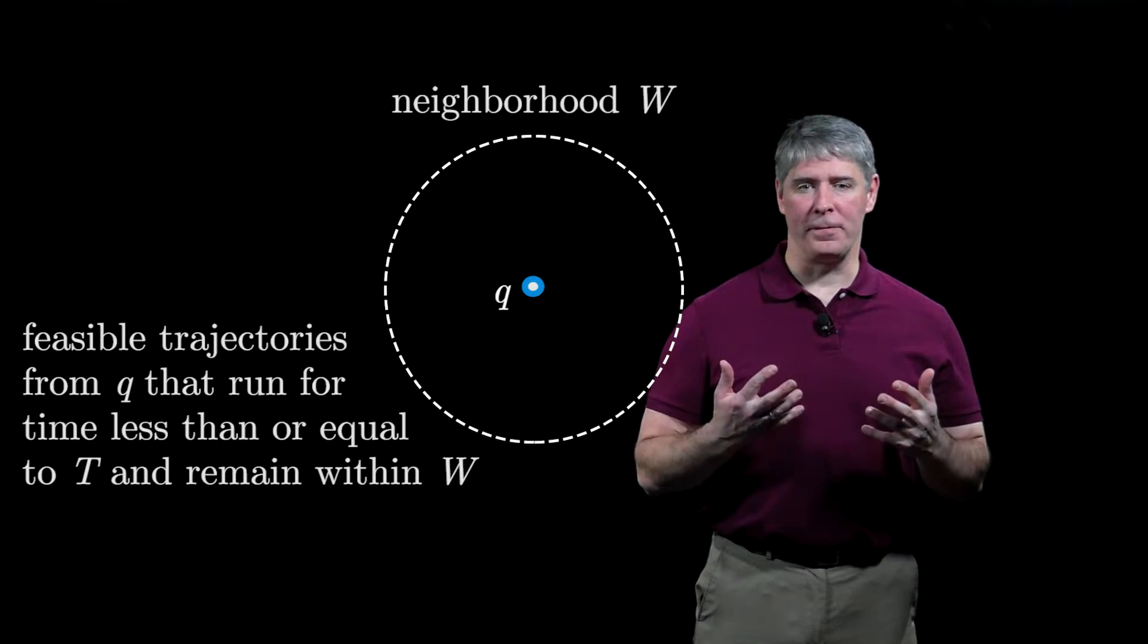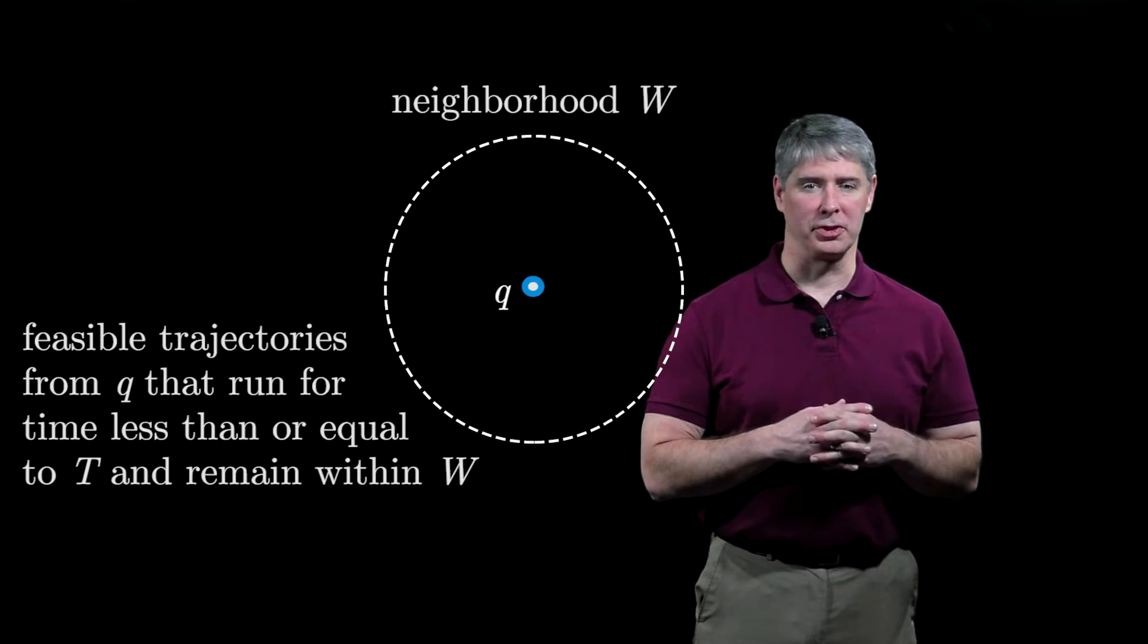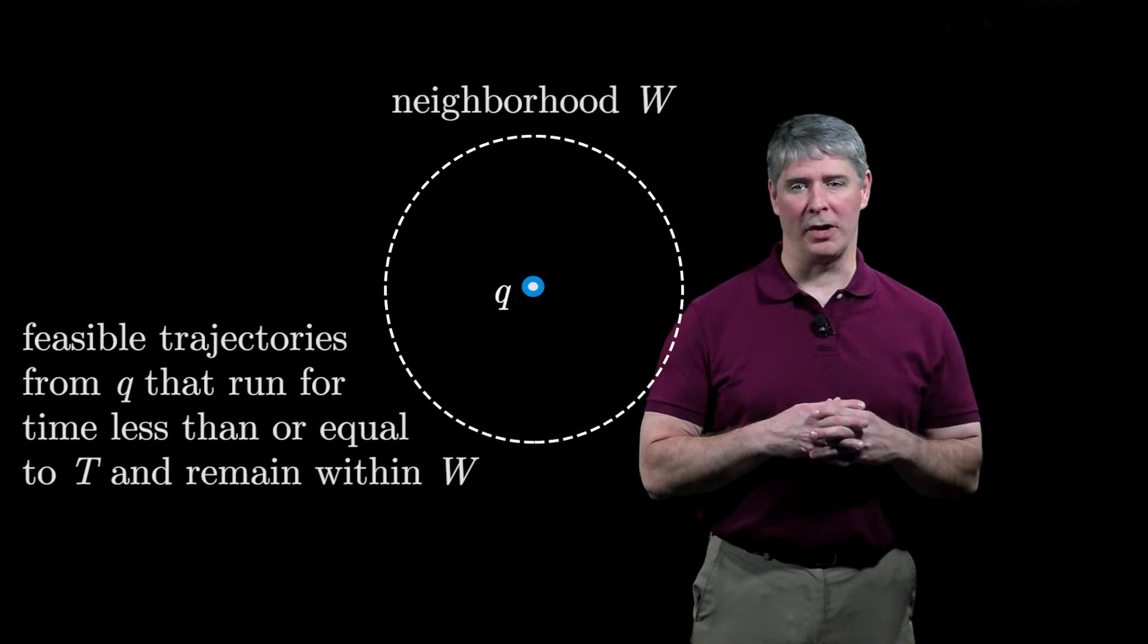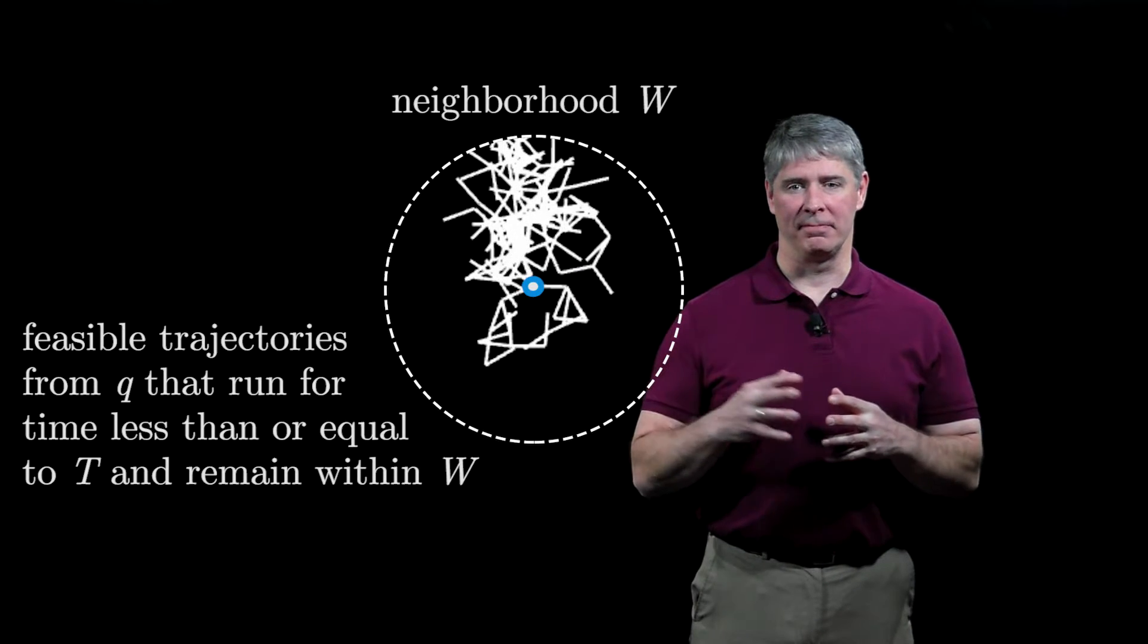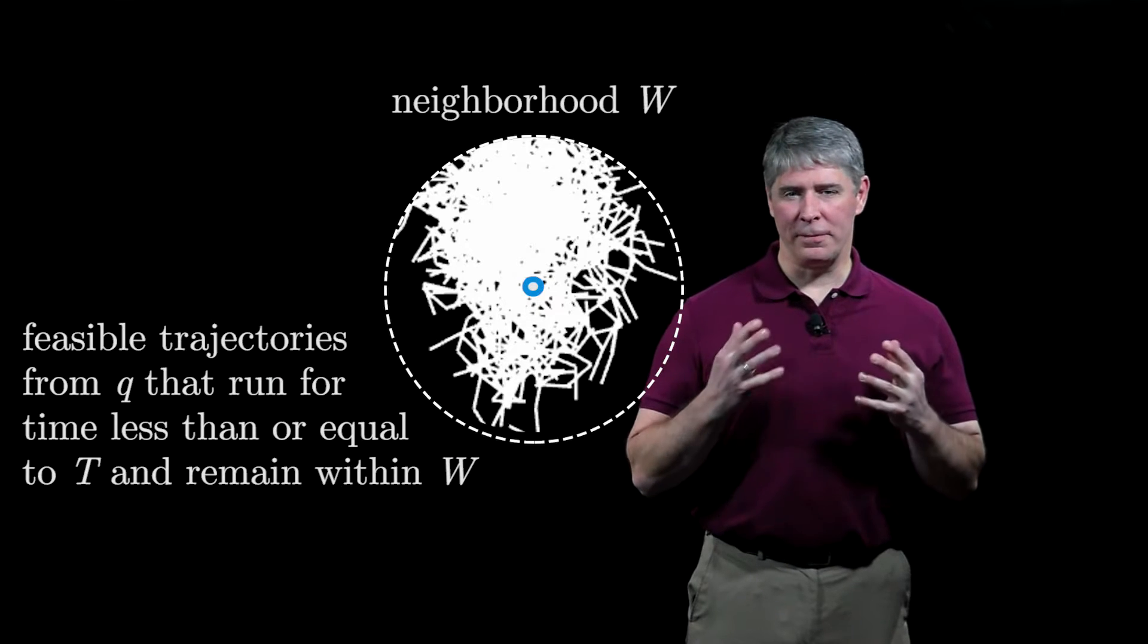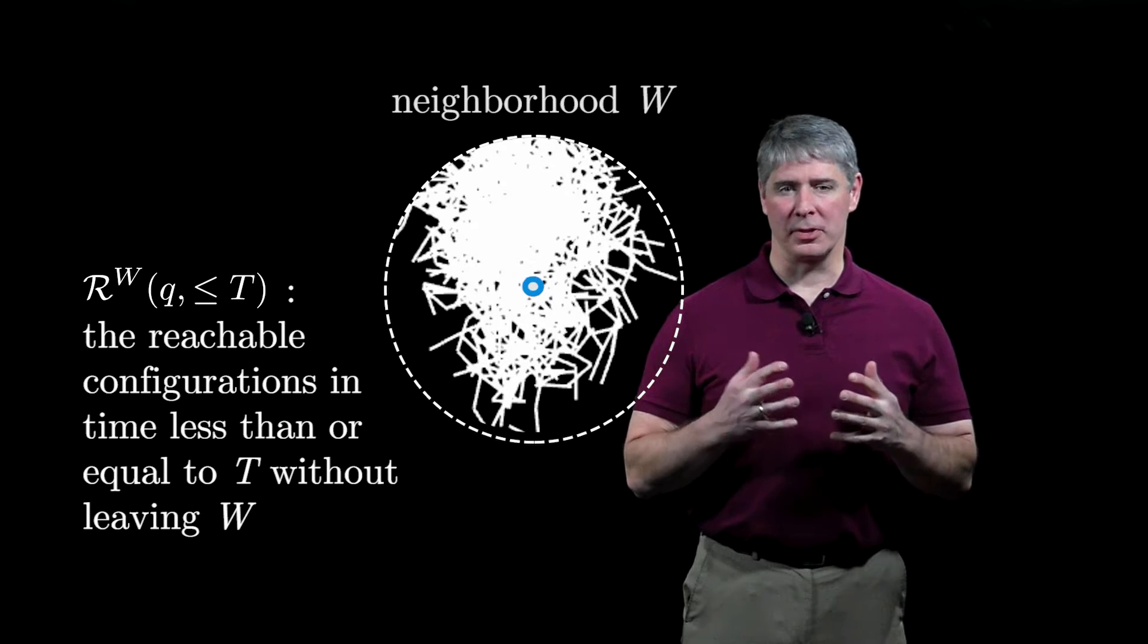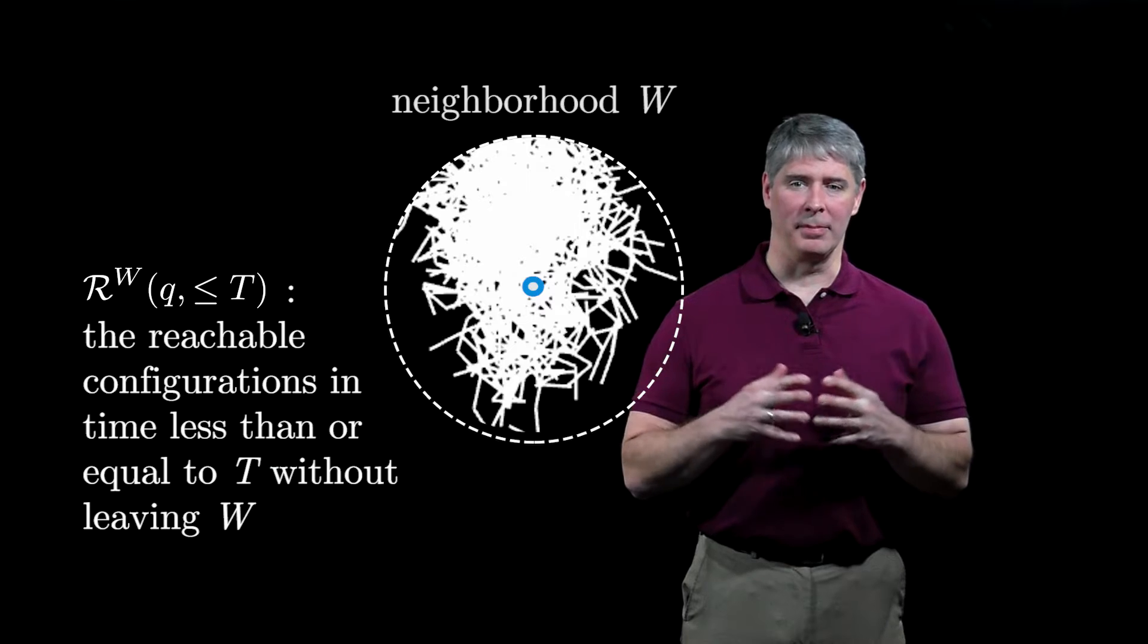Now consider all feasible trajectories emanating from q for all possible controls u(t) running for time less than or equal to capital T while remaining within the neighborhood W, as in this animation. Define the reachable set R^W(q, ≤ T) as the set of reachable configurations in time less than or equal to T without leaving W.